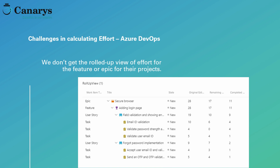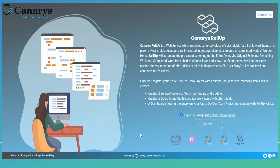This challenge is addressed by our solution Canary's roll-up. Canary's roll-up automates the process of summing up, or rolling up the effort fields — specifically original estimate, remaining work, and completed work — from unit-level work items like tasks, and shows it at requirement level and above.